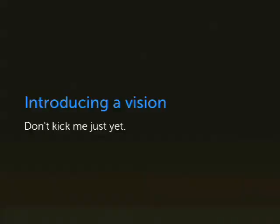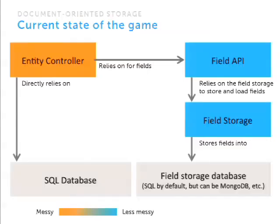So that brings me to the vision. The current state is this: it all starts with the entity controller, which queries the SQL database to get base fields of an entity, then calls hook_entity_update, then calls the field API to grab fields. The field API relies on the field storage to load the fields, and by default that field storage database is the same SQL database — but it can be different. We have the MongoDB field storage in production at a couple of very high-end sites and it's working very well. But we have this split-brain issue where the entity and field systems are separate.